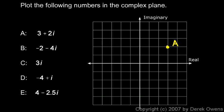And you can see I went 3 over and 2 up. So 3 along the real axis and 2 along the imaginary axis. Or if you want to, you could think 3 here and 2 here, and then you end up at that point like that.